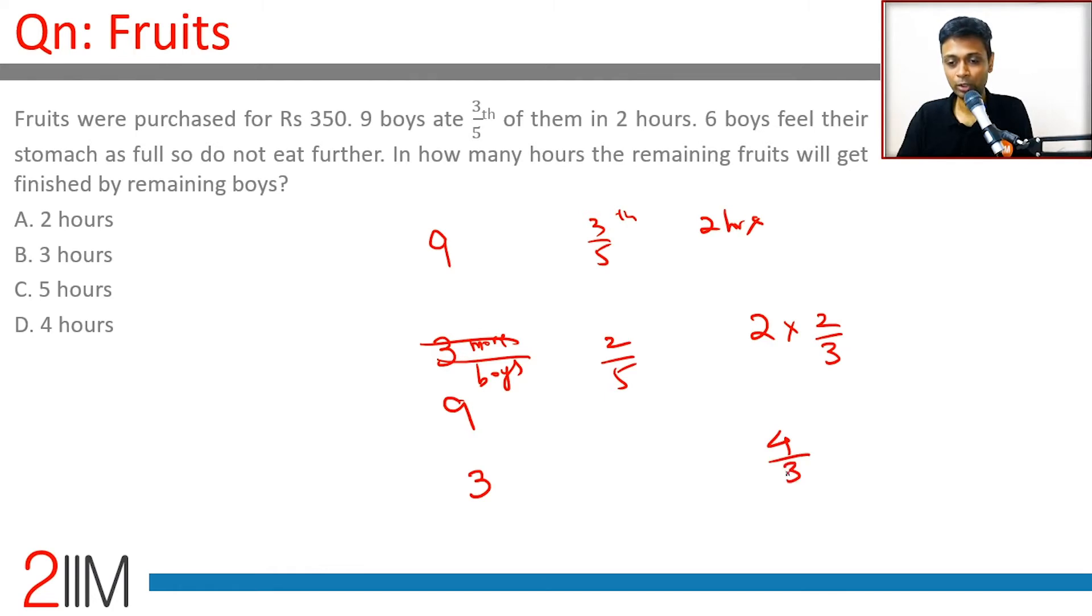So 4/3 times 3 equals 4 hours more. Now let's do this as simple ratios.